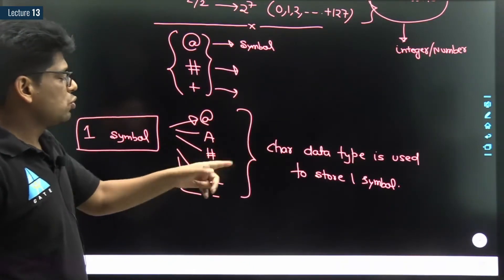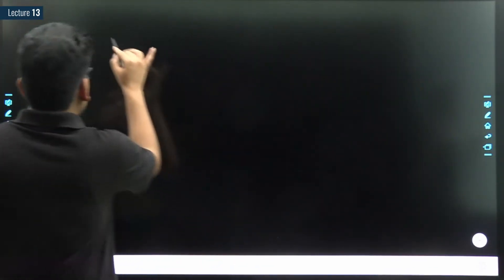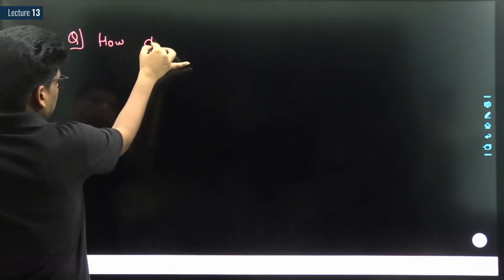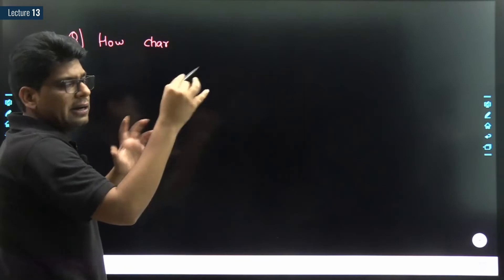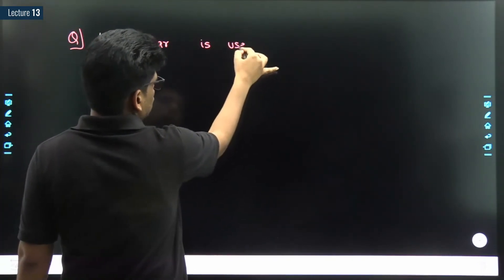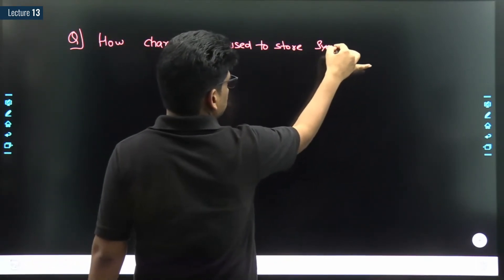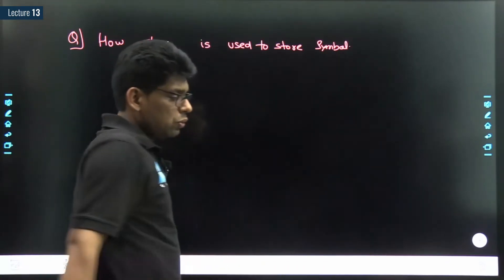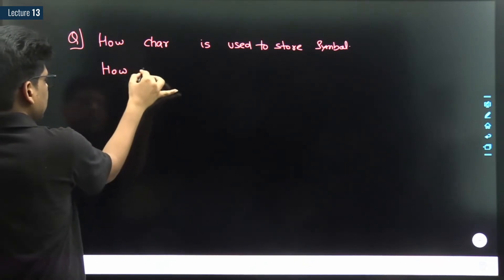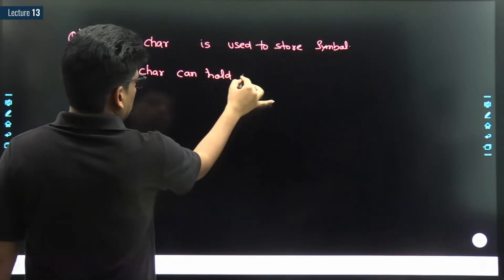We have mapped into our minds that a character can hold numbers, but now you are saying that character data type is used to store one symbol. The big question is: how can char hold a symbol? How can a char data type variable hold a symbol?